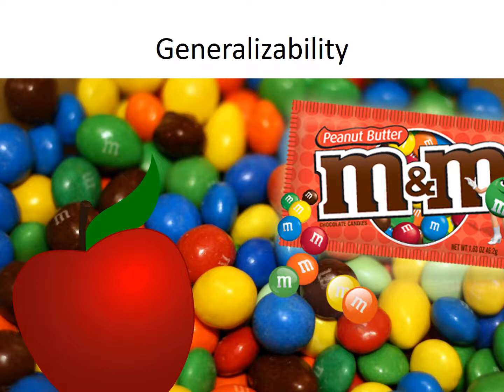In some cases, it can be as easy as knowing the apple does not represent the population of chocolate candies. In other cases, though, it can be more tricky. We might have to think more about the intended population and the way the research was carried out. Would a bag of peanut butter M&Ms allow us to draw conclusions about all candies with chocolate and peanut flavors?